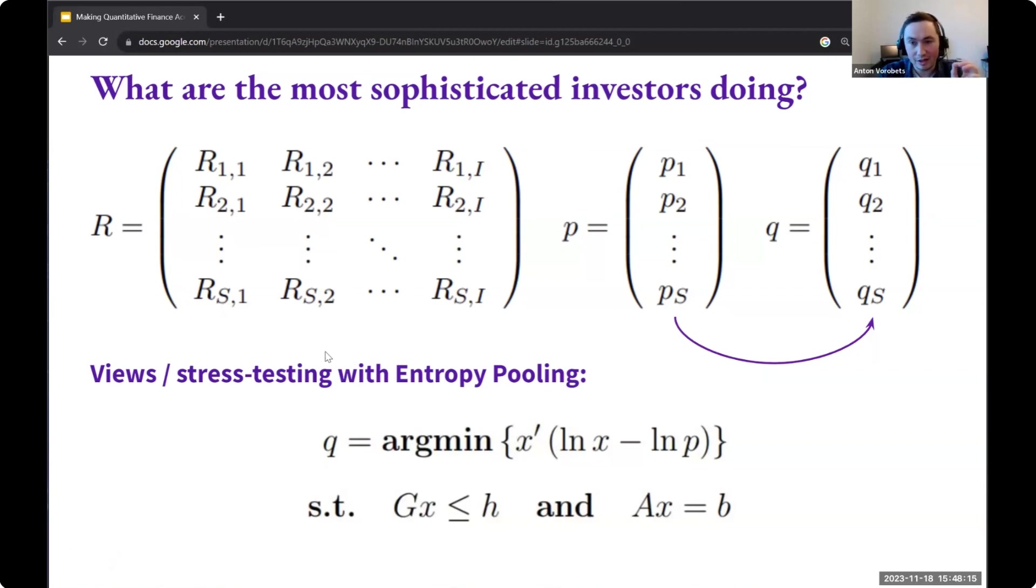But you can think about entropy pooling as a generalization of Bayesian updating in the sense that you go from the prior to the posterior by changing, by inputting views about the posterior. So usually in Bayesian updating, you have a prior, then you get some data, and then you get to the posterior. You don't need this with entropy pooling. So it's, of course, very flexible for you to do what you want.